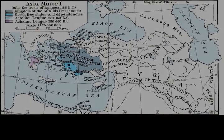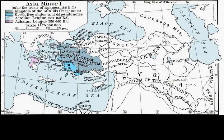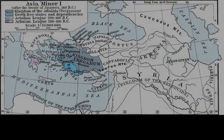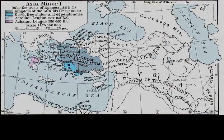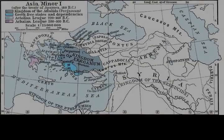The Battle of Mount Olympus was fought in 189 BC between the Galatian Gauls of Asia Minor and an alliance consisting of the Roman Republic and Pergamum. The battle ended in a crushing allied victory. Livy is the main source for this battle, and his description can be found in Book 38, Chapters 17-23.